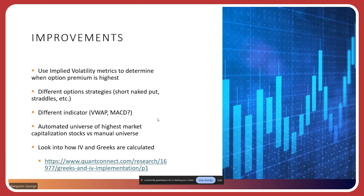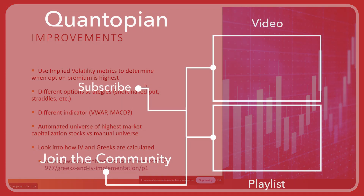We can also look into how IV and Greeks are calculated. Jared sent me a message this morning about a new research paper showing how Lean — the engine running the backend of QuantConnect — calculates the Greeks and IV, because it is different for each vendor. QuantConnect has done some really interesting research on this, and I think I'm going to do a talk on it in a couple of weeks after I dive into it.